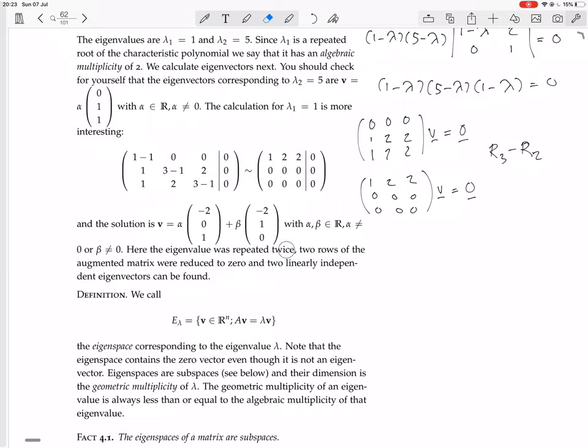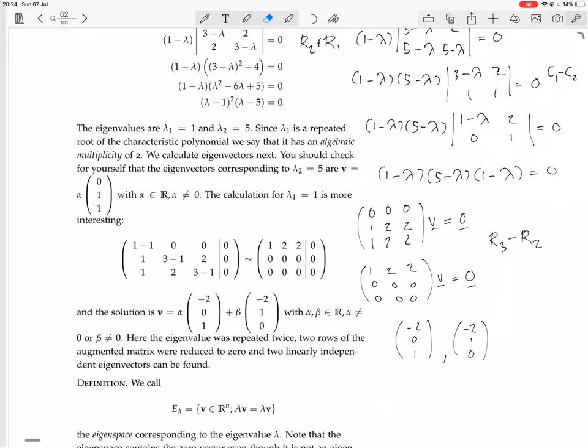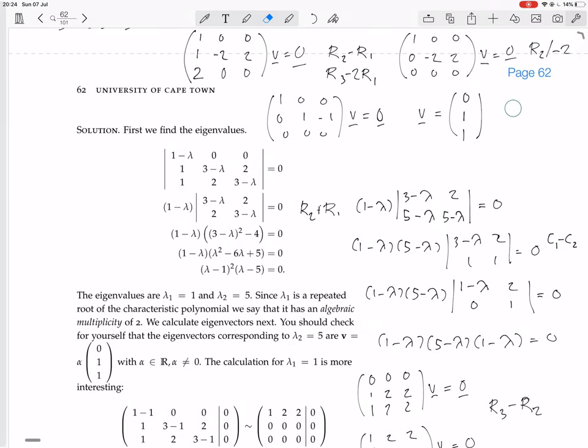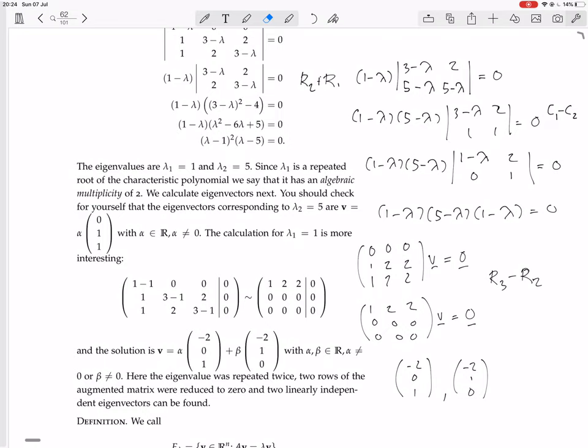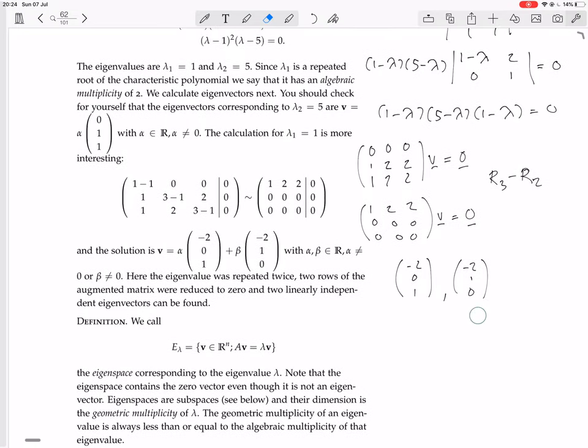Here the eigenvalue was repeated twice. Two rows of the augmented matrix reduced to 0, and two linearly independent eigenvectors can be found. The two linearly independent eigenvectors are, there's many possibilities, but [-2, 0, 1] and [-2, 1, 0] are an example. If you give these two eigenvectors, the eigenvectors in general are linear combinations of those two vectors. Just like in the previous case, we had just one row of zeros, we end up with just one eigenvector, or the eigenvectors are all scalar multiples of that. Here it's two linearly independent eigenvectors, so the eigenvectors for this eigenvalue are linear combinations of alpha and beta.